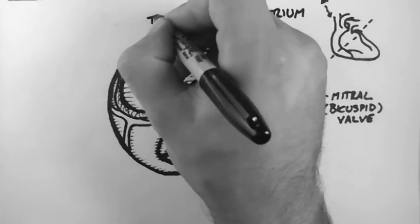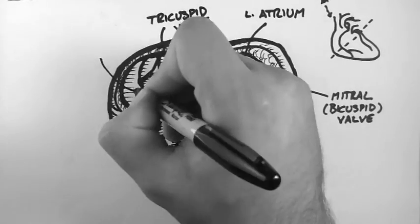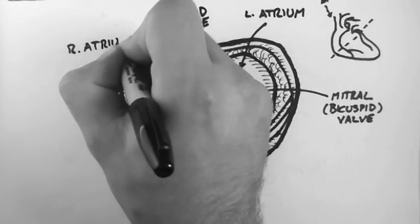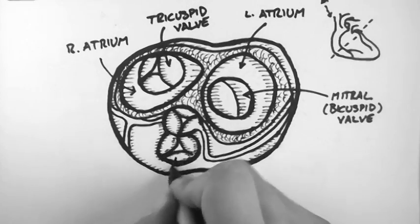This valve here with three cusps is called the tricuspid valve and it lies in the right atrium and it serves as the valve between the right atrium and the right ventricle.